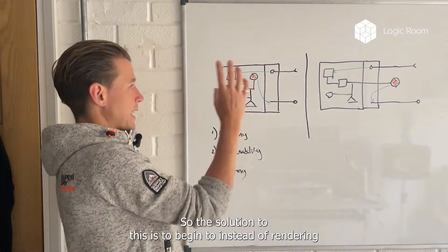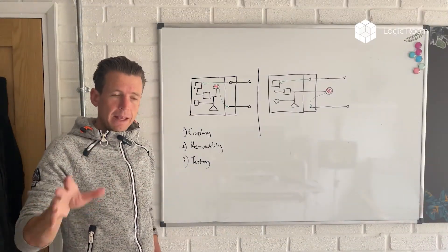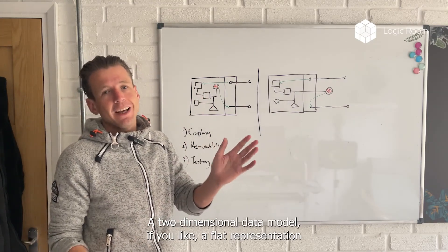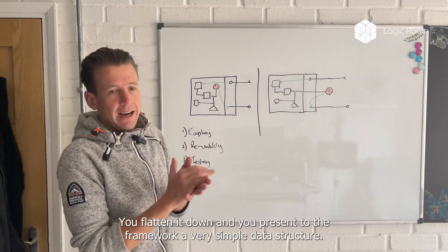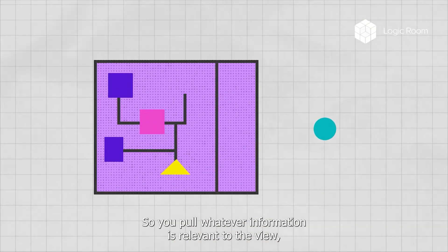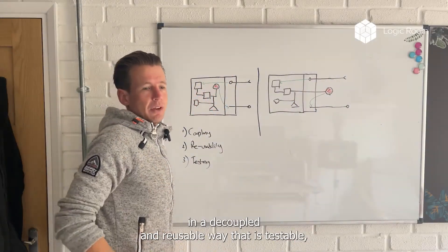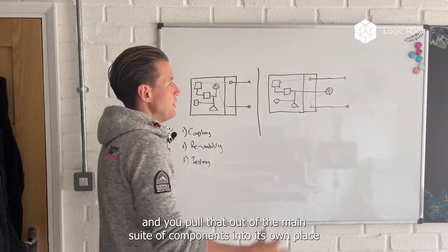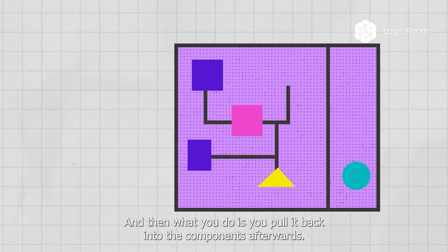So the solution to this is to begin to, instead of rendering components, move towards rendering view models. And a view model is really simple. It's just a flat representation - a two-dimensional data model, if you like - a flat representation of all the information that would have been contained in here, would have represented all the coupling. And you flatten it down and you present to the framework a very simple data structure. So you pull whatever information is relevant to the view, you pull it out and you expose that on its own in a decoupled, reusable way that is testable. You pull that out of the main suite of components into its own place that it can be rendered on its own and it's not coupled to the components. And then what you do is you pull it back into the components afterwards.